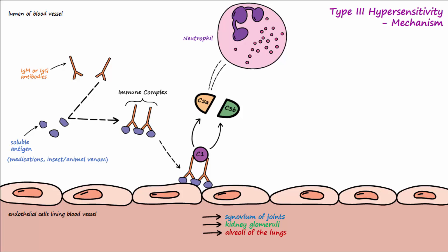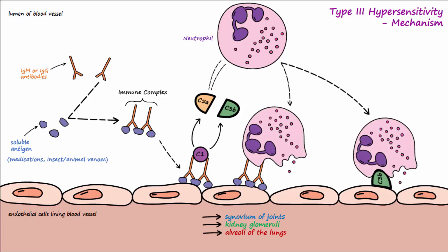Once recruited, the neutrophils utilize Fc receptors and complement receptors to bind to the antibodies and C3b deposited in the tissues. Upon binding, the neutrophils release cytotoxic granules containing reactive oxygen species that damage the body tissues.